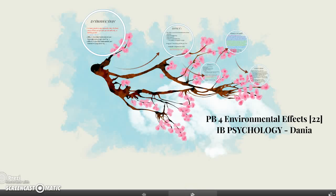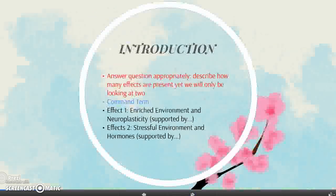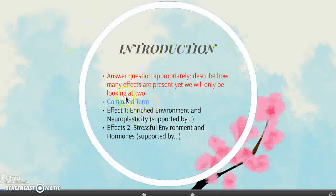I'm going to be talking about PNB4, which is to discuss two effects of the environment on physiological processes. There are many effects of the environment that could affect your physiological processes like anatomy and physiology, but we're not going to be talking about them all. In the introduction, say that there are lots of processes, but the two we're going to be talking about are this one and this one. That ensures you answer the question appropriately. Because the command term is 'discuss', this essay will offer a balanced review that includes a range of arguments, factors, or hypotheses.